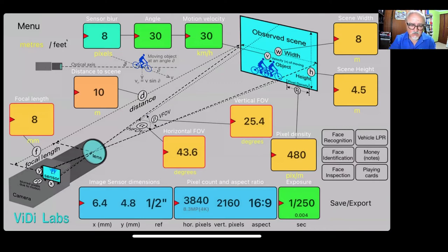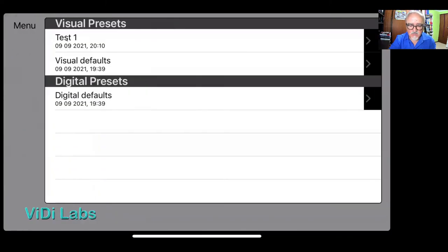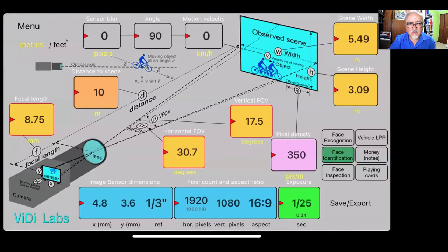I find it also very useful if you save the default settings, in case you want to go back to what it is. So I've saved here as visual defaults. And you will see that goes back to what we had at the very beginning sensor of 4.8 by 3.6 HD resolution and so forth. So there you go.